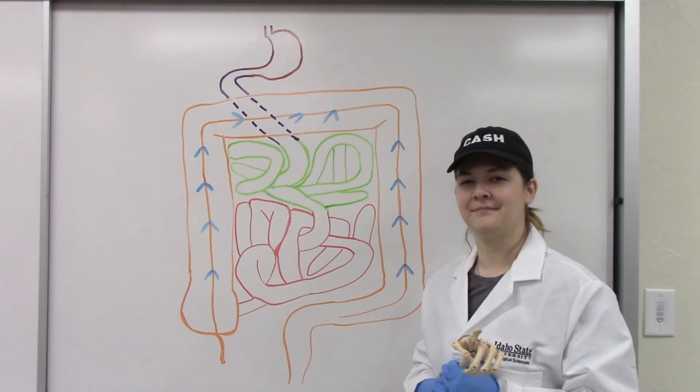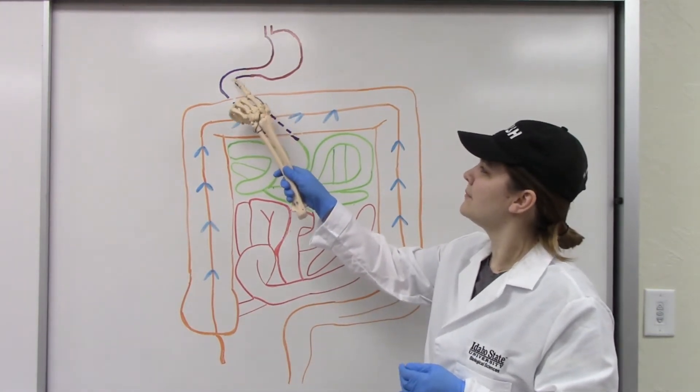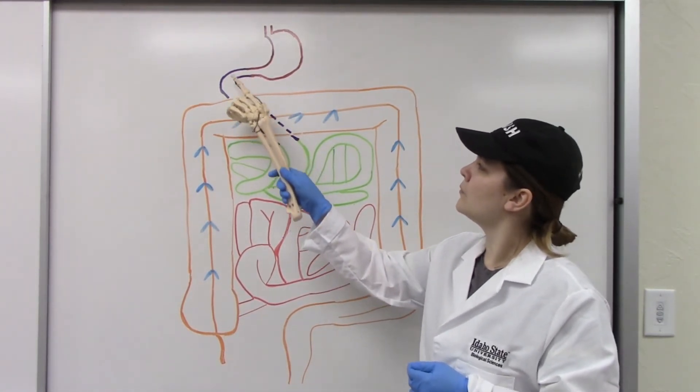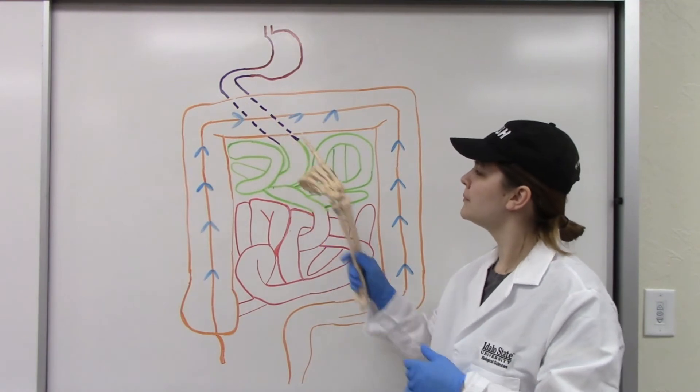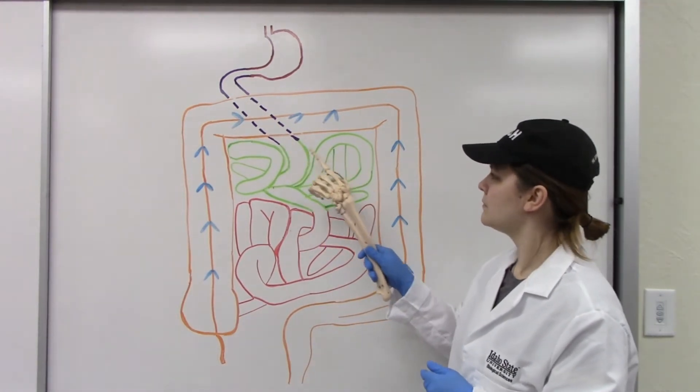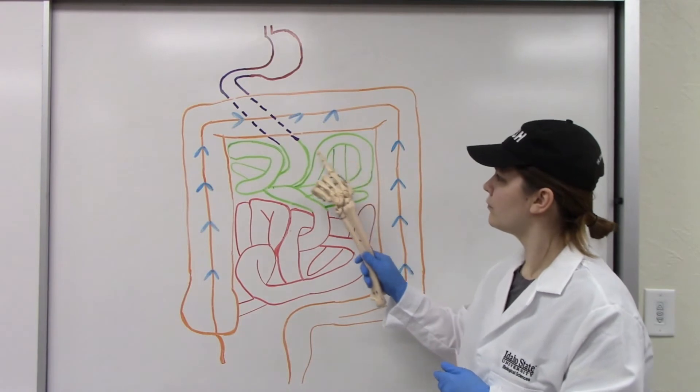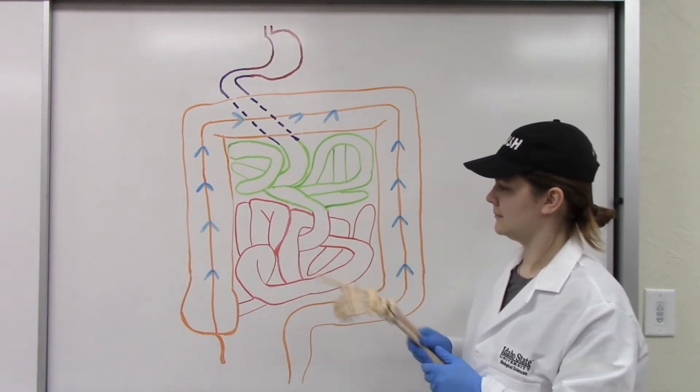The most proximal portion of the small intestine is the duodenum. It is a small, C-shaped portion. The middle section of the small intestine is called the jejunum. The most distal of the small intestine is the ileum.